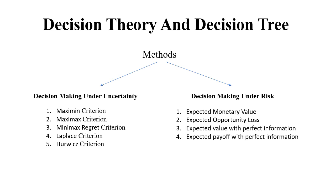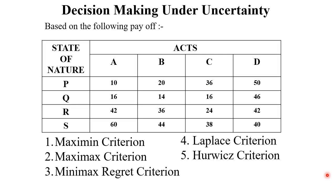Now in this video we are going to solve problem sums relating to decision making under uncertainty. The question is given as: based on the following payoff table, we need to find the maximin criterion, maximax criterion, minimax regret criterion, Laplace criterion, and Hurwicz criterion. The question is split into two parts — one will be the acts or actions, also known as alternatives, and the second part will be the states of nature. Always try to identify the actions and the state of nature, and all the payoff values given in the question.